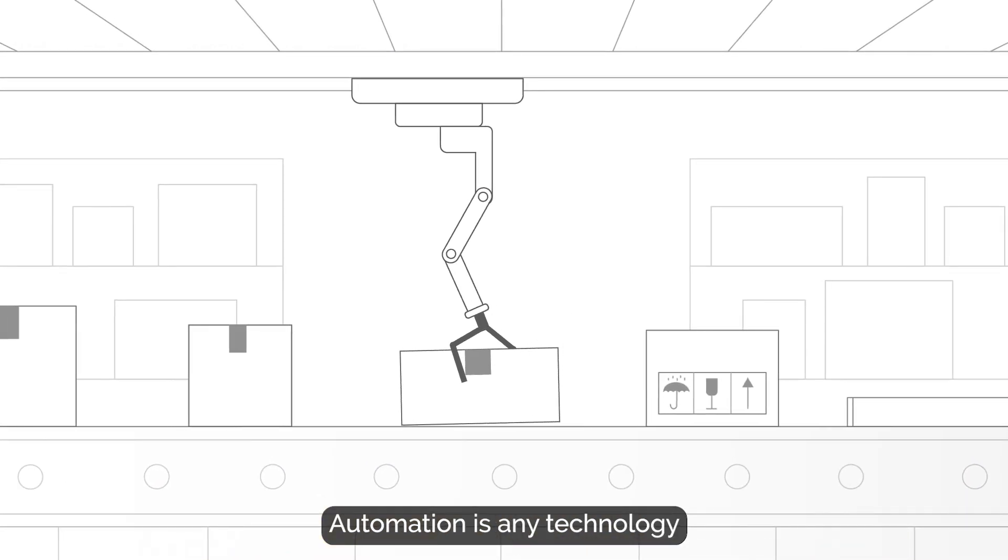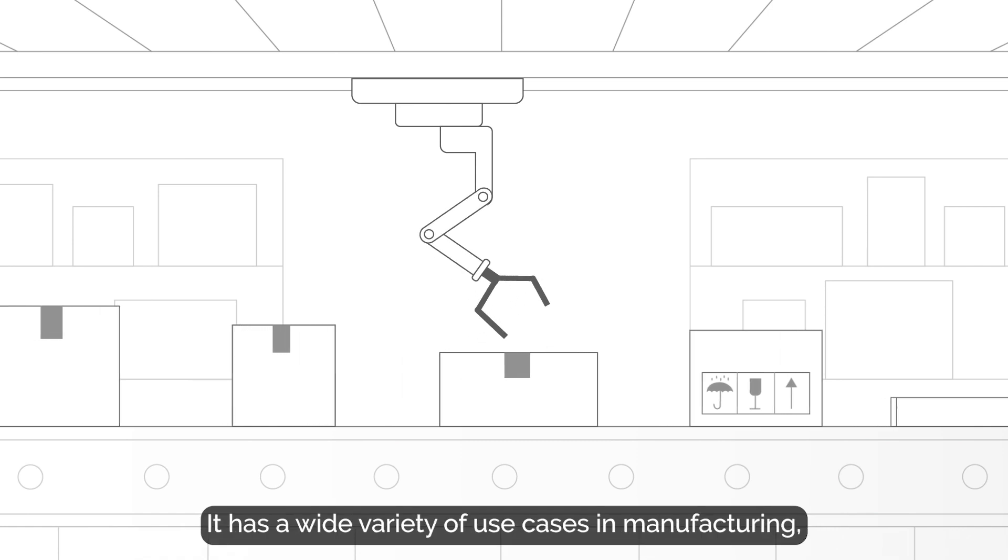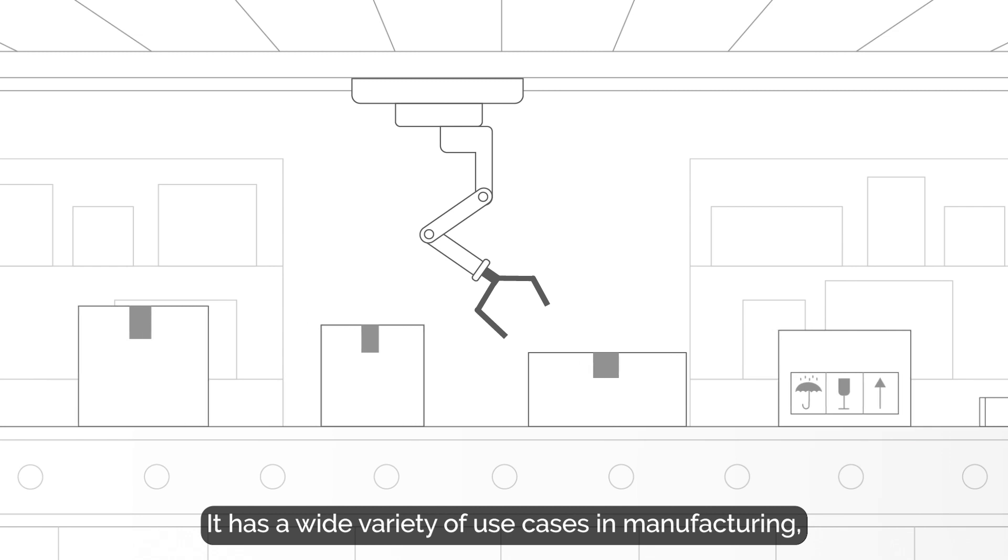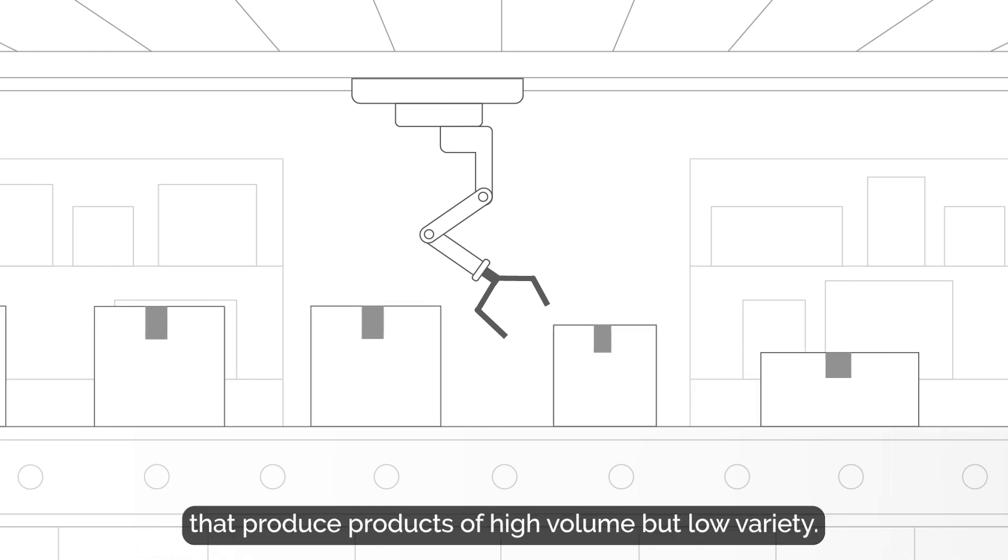Automation is any technology which cuts down the need for human involvement. It has a wide variety of use cases in manufacturing, most commonly in organisations that produce products of high volume but low variety.